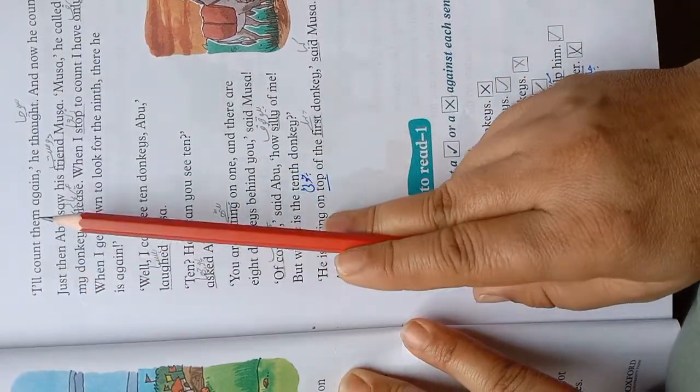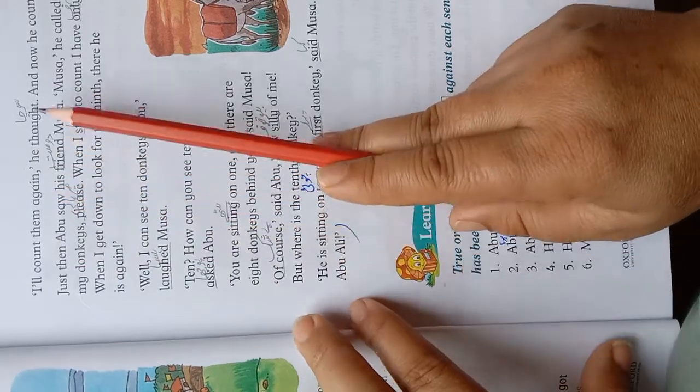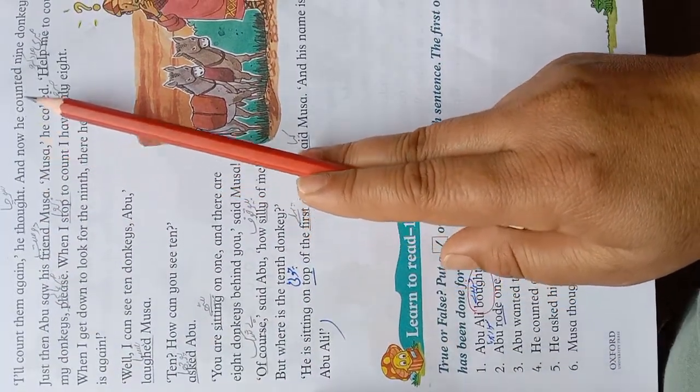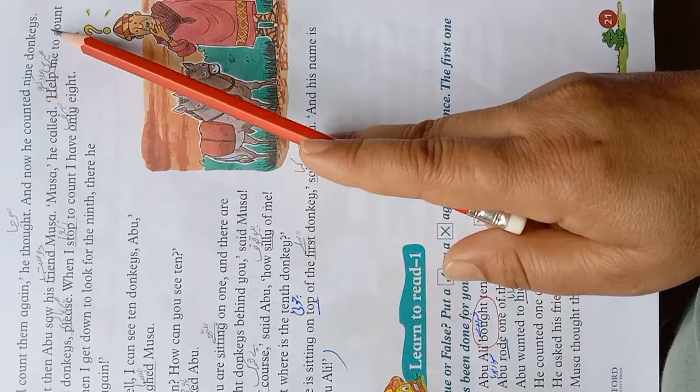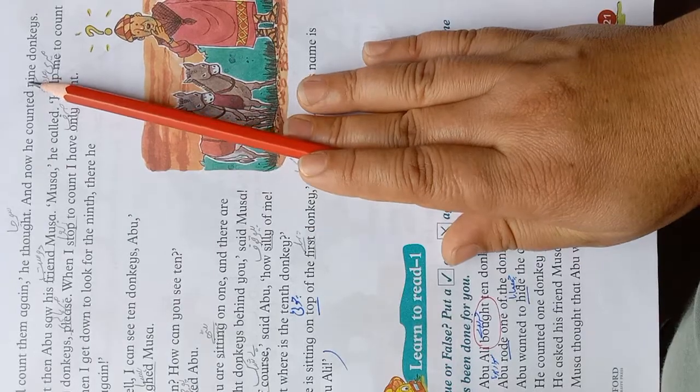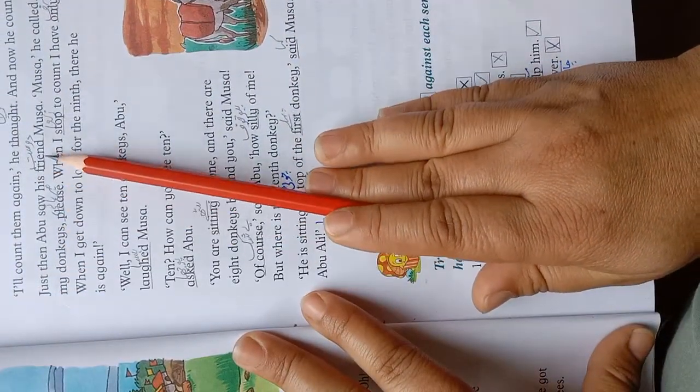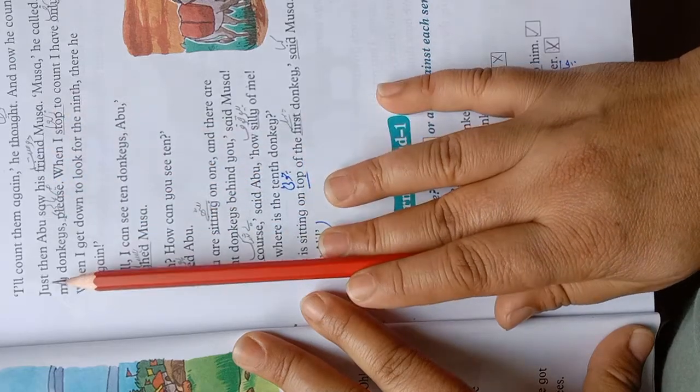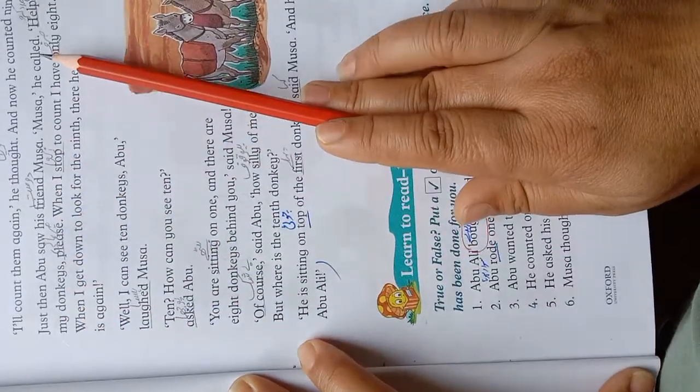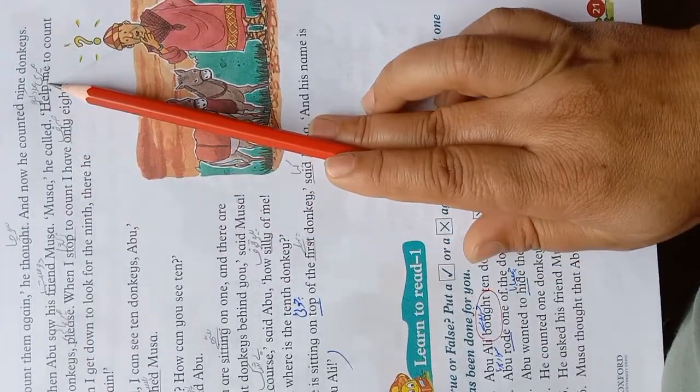I shall count them again. I shall count them again, he thought. He counted 9. Just then Abu saw his friend Musa. Tab Abu ne apne dost Musa ko dekha. Musa! He called. He called him.